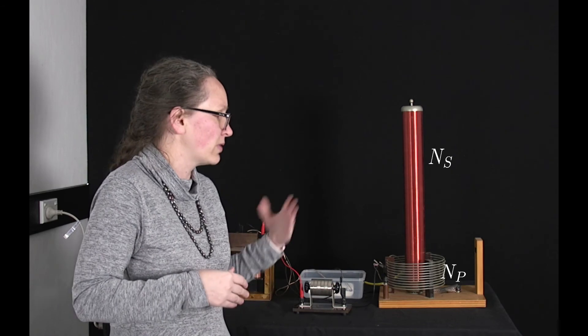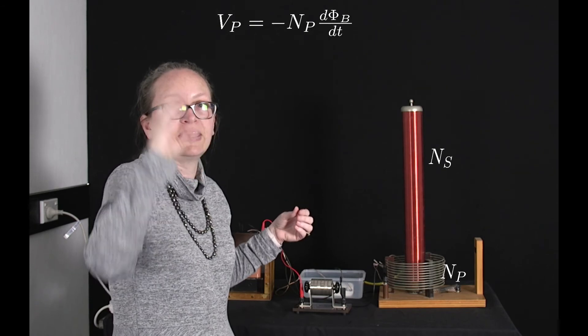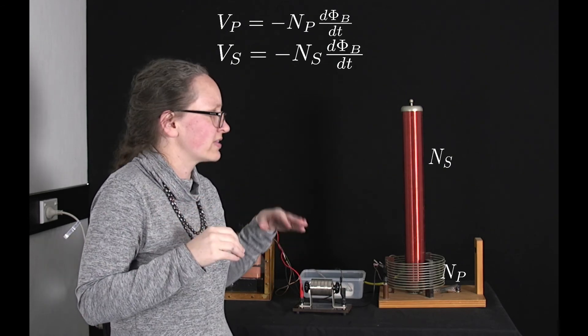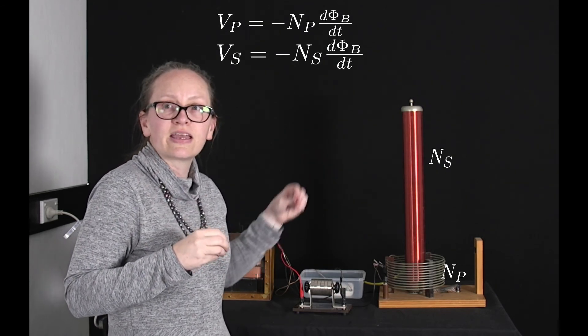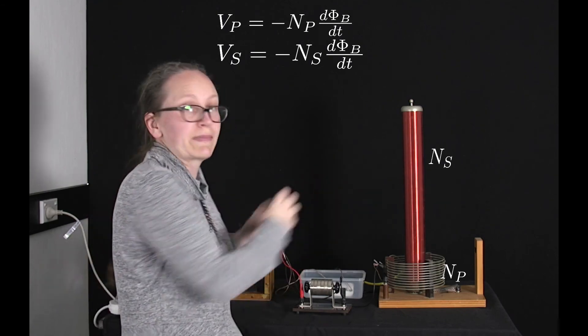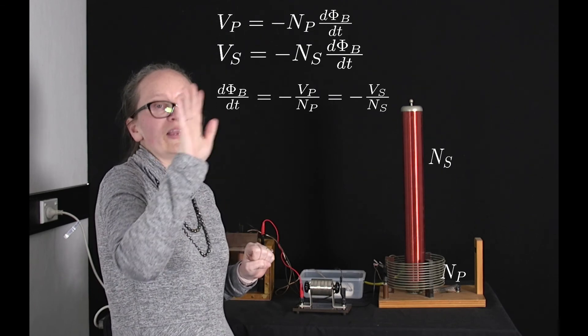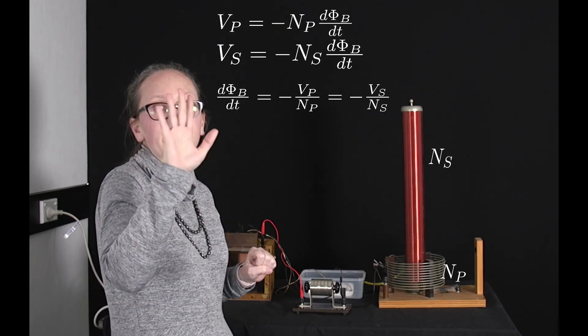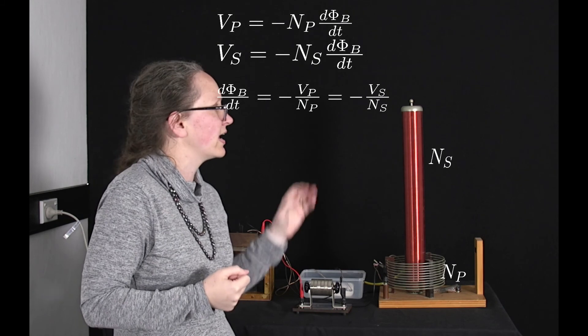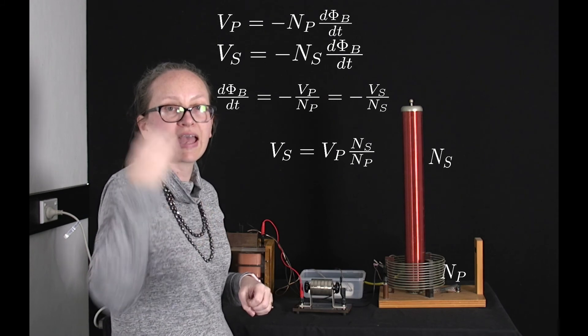So for the primary coil we can write the voltage induced across it, the EMF, we can write as VP is equal to minus NP dphi B dt using Faraday's law and for the secondary coil we've got that the voltage induced across this VS is equal to minus NS dphi B dt and we've said it's the same dphi B dt because these are wrapped about the same core. So this tells us that dphi B dt is equal to minus VP over NP which is equal to minus VS over NS. So we can rearrange this to calculate the voltage induced in the secondary coil and we can see that VS is going to be equal to VP times NS over NP.